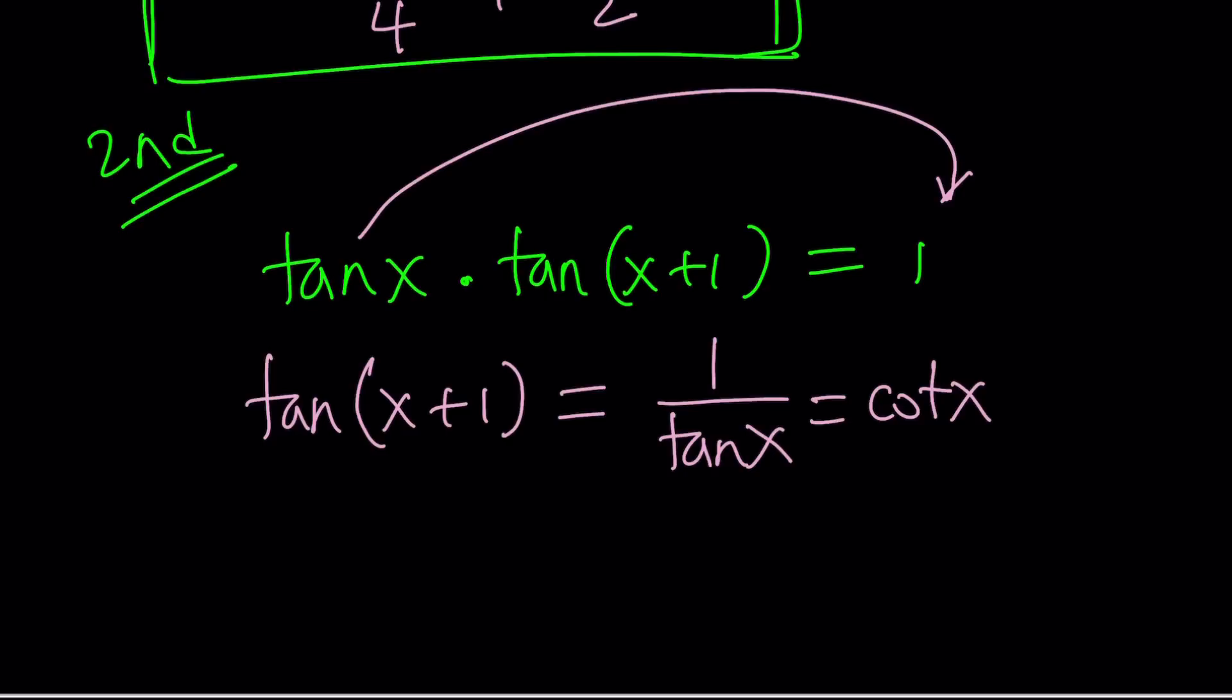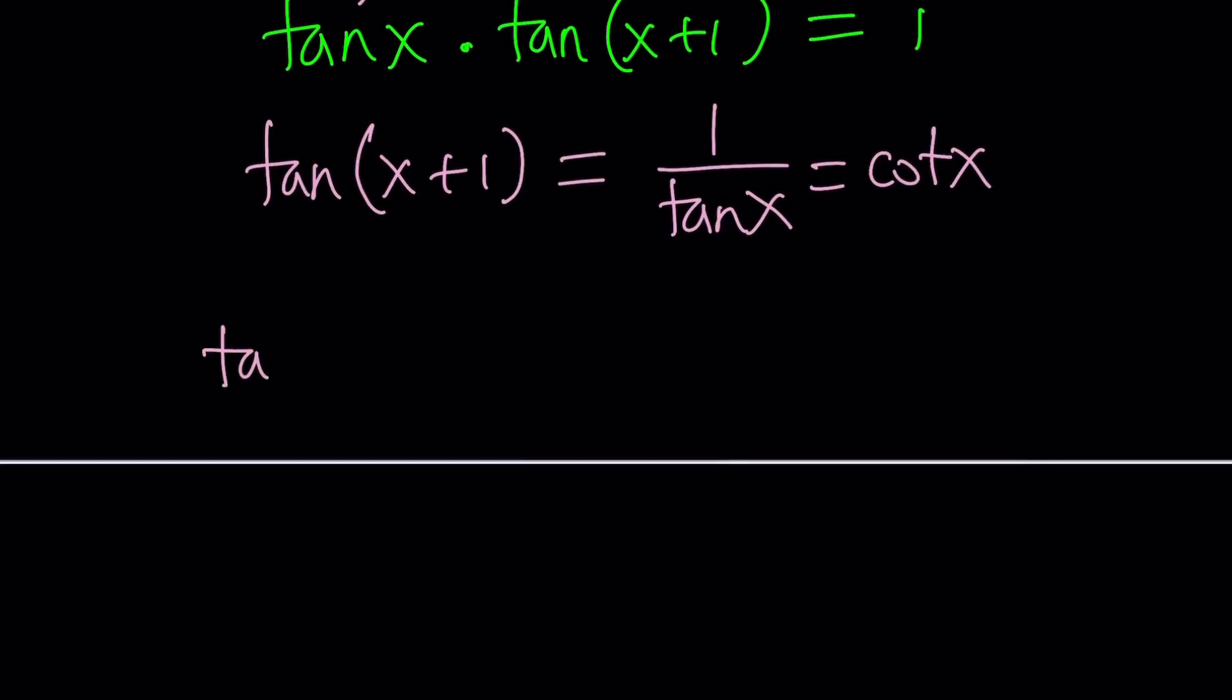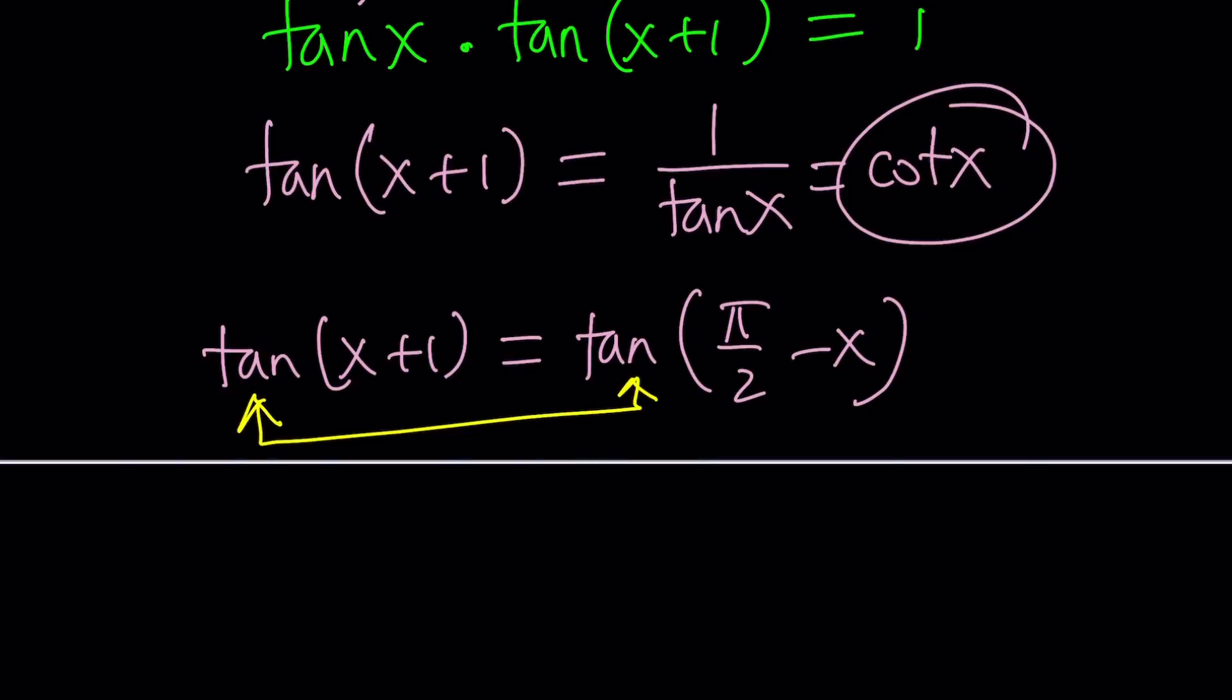Because, tangent and cotangent are co-functions, but at the same time, they are reciprocals. So, tangent x plus 1 equals cotangent. We got a tangent on one side of the equation and cotangent on the other. Can we solve this equation? Yes, but we need to do a trigonometric touch. We'll turn cotangent x into tangent of pi over 2 minus x. Because, if two angles are complementary, then this works.